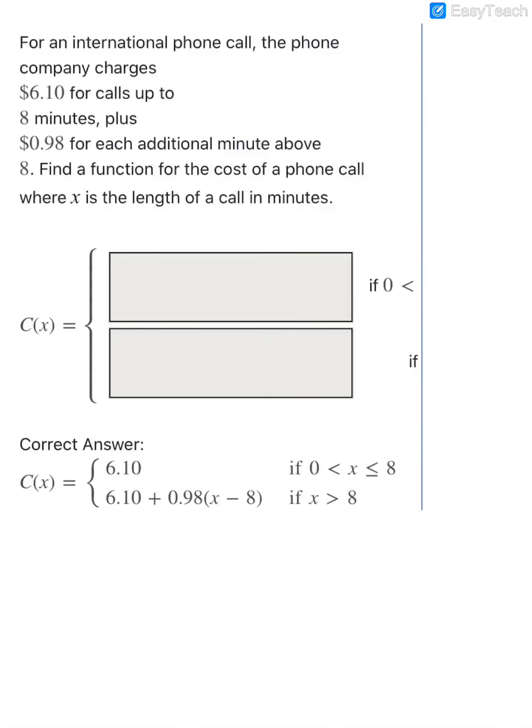Finally, we're going to look at what is called a piecewise function where we've got two pieces. This is an international phone call. We see that the phone company charges $6.10 for calls up to 8 minutes. So let's start with that. So my cost will be a flat $6.10 if my call is under 8 minutes, or up to 8 minutes would include it. So we'll say less than or equal to 8 minutes, and of course it is greater than zero because once you place that call, you're actually on the phone.